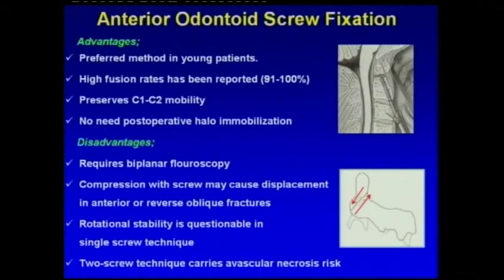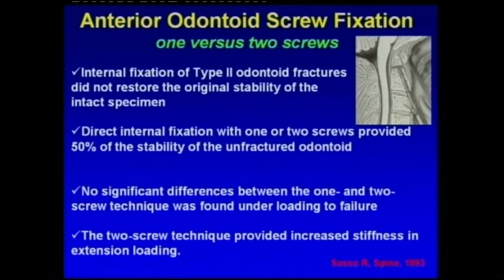Anterior screw fixation preserves C1-C2 mobility. However, it has some disadvantages such as requiring bi-planar fluoroscopy, and rotational stability is questionable with single screw technique. Compression with the screw may cause displacement in reverse oblique fractures. There is no significant difference between one and two screw techniques under loading to failure, though the two-screw technique provides increased stiffness in extension loading.